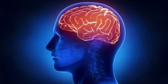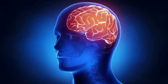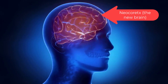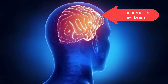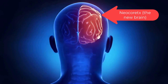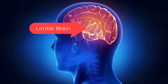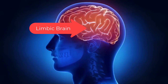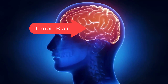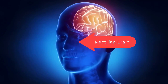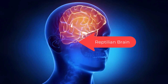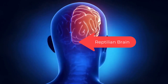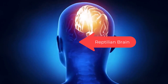Your brain has three basic layers and only one real decision maker. The new brain, the neocortex — it thinks and processes rational data. The middle brain, the limbic brain — it feels emotions and is our instinct for fight-or-flight response.